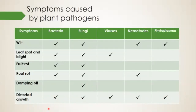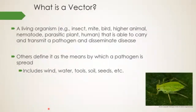A vector is a carrier of a disease — a living organism. Examples are insects, birds, other animals, people, and even parasitic plants if they're causing damage to a tree or plant. Mobile organisms that can move around are vectors, able to carry and transmit a pathogen from place to place. You can also define a vector as environmental: wind can be a vector, water can certainly be a carrier, and tools, soil, and seeds can all be vectors of disease.